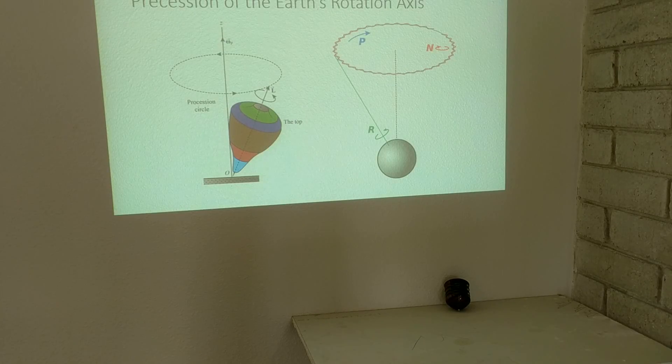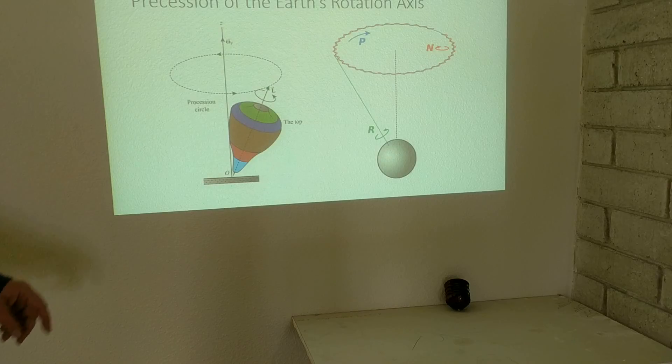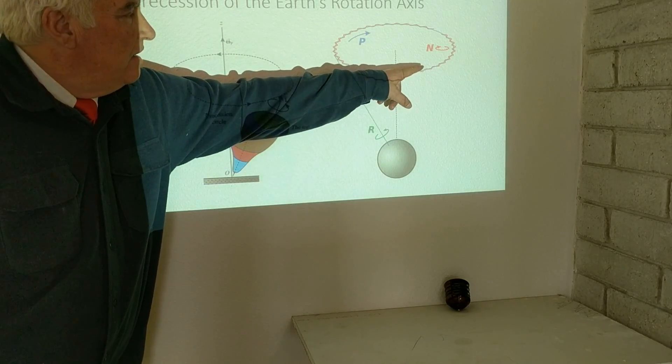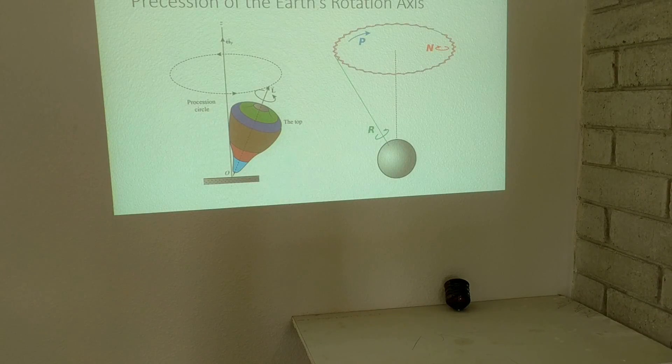There is another effect having to do with precession and how the Earth operates. There is a nutation, which is a changing speed in the precession caused especially by the moon's pull on the Earth.